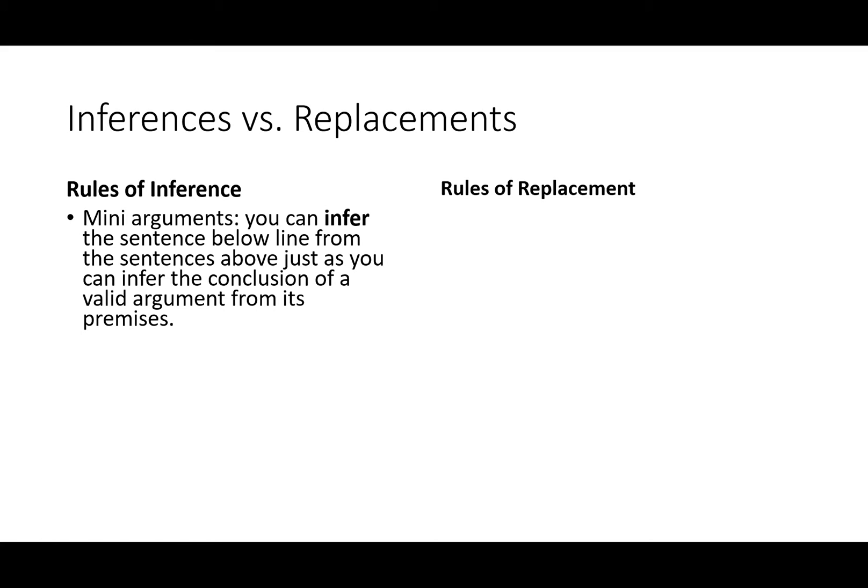Rules of inference are mini arguments. You can infer the sentence below the line from the sentences above, just like you can infer the conclusion of a valid argument from its premises.